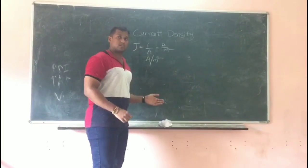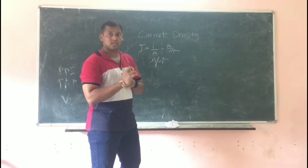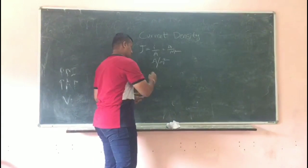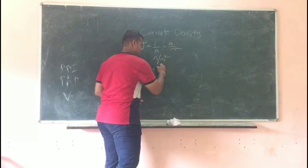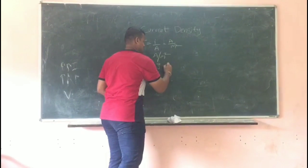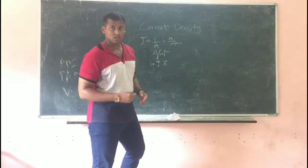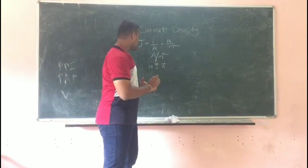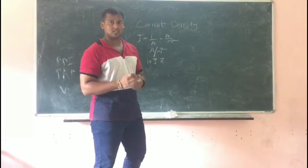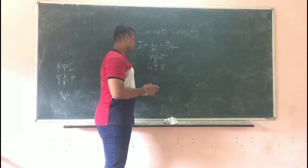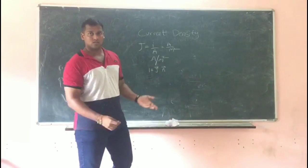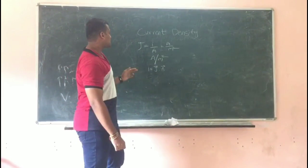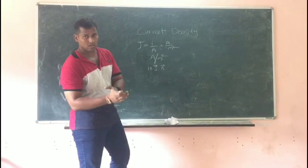Current density is a vector quantity. If you want to write current in vector form, we can write i is equal to j vector dot A vector. As we know that current is a scalar quantity, when you want to write in vector quantity, this is the format we can write in vector form. Now we can take an example.